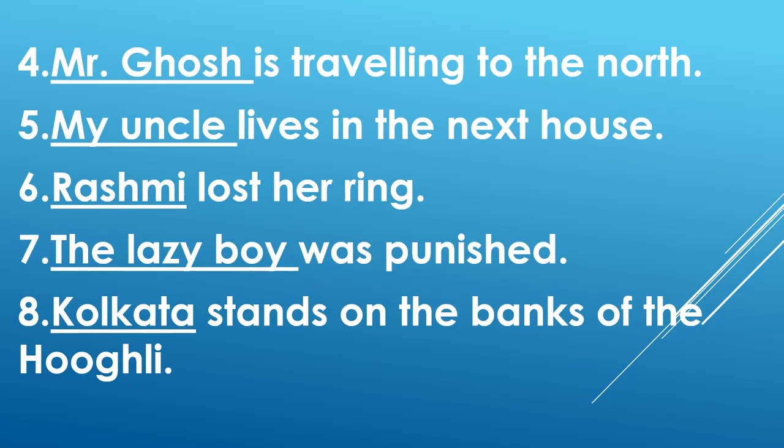Sixth sentence: Rashmi lost her ring. Who lost her ring? Rashmi. Rashmi is the subject, so underline Rashmi — it is in nominative case. Seventh sentence: the lazy boy was punished. Who was punished? The lazy boy — it is the subject, so underline the lazy boy. It is in nominative case.